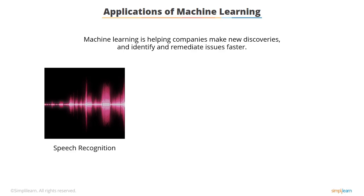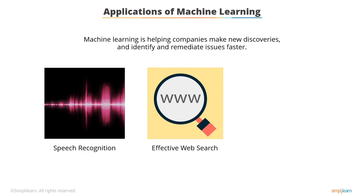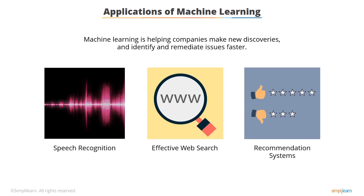Speech recognition: machine learning has improved speech recognition systems using automatic speech recognition, or ASR, as a large-scale realistic application to rigorously test the effectiveness of a given technique. Effective web search: machine learning techniques such as Naive Bayes extract categories from user-entered queries to enhance results quality, based on query logs to train the model. Recommendation systems: according to Wikipedia, recommendation systems are a subclass of information filtering systems that seek to predict the rating or preference a user would give to an item, using machine learning algorithms to provide product or service recommendations.